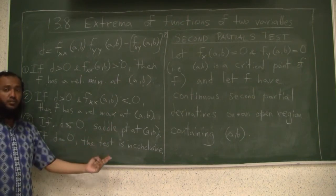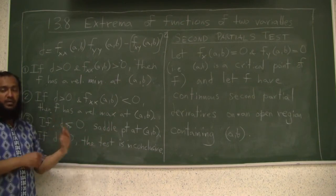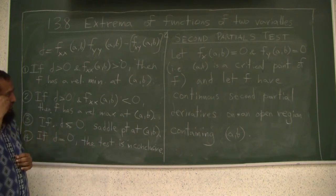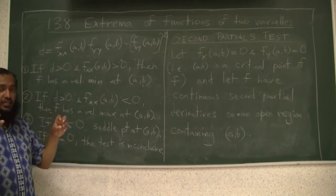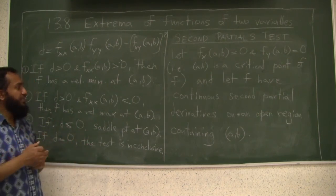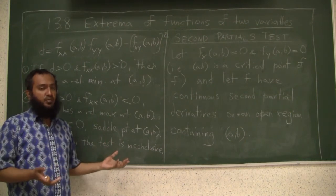If d is zero the test is inconclusive, then you have to go back to the algebra, kind of the algebra we are doing to check is it minimum, maximum or saddle point. So this test can help you sometimes cut down the amount of work you have to do to check each critical point for its minimum or maximum. But sometimes this test will not be useful.